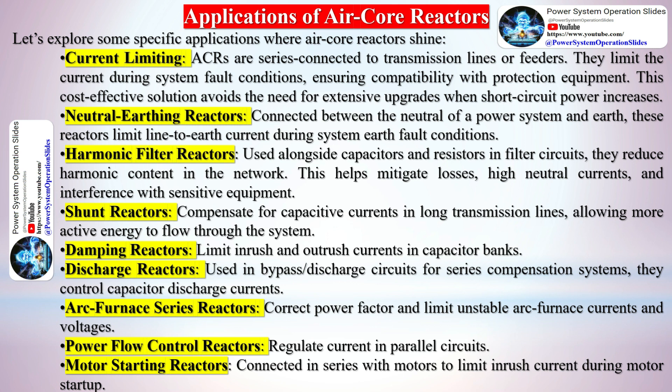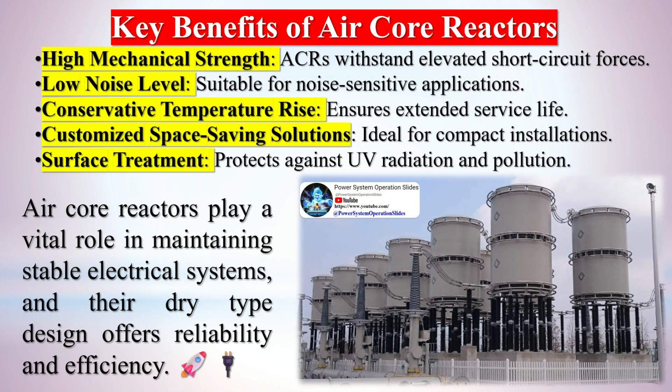Shunt reactors compensate for capacitive currents in long transmission lines, allowing more active energy to flow through the system. Damping reactors limit in-rush and out-rush currents in capacitor banks. Discharge reactors, used in bypass discharge circuits for series compensation systems, control capacitor discharge currents. Arc furnace series reactors correct power factor and limit unstable arc furnace currents and voltages. Power flow control reactors regulate current in parallel circuits. Motor starting reactors are connected in series with motors to limit in-rush current during motor startup.